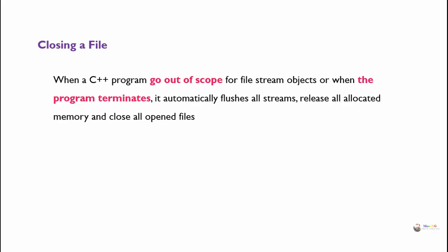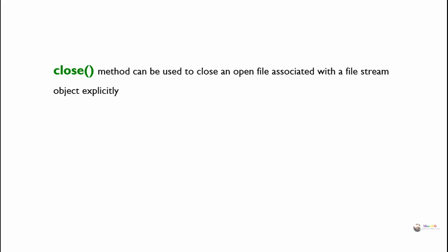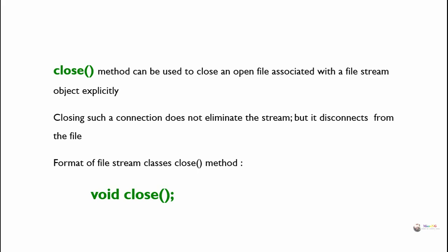Closing a file: When a C++ program goes out of scope for file stream objects, or when the program terminates, it automatically flushes all streams, releases all allocated memory, and closes all open files. As good programming practice, all open files should be closed before program termination. The close method can be used to explicitly close an open file associated with a file stream object. Closing the connection does not eliminate the stream — it simply disconnects it from the file. The format is void close(), which takes no parameters.